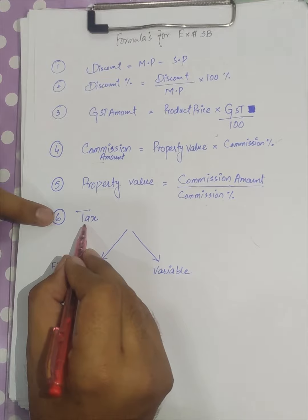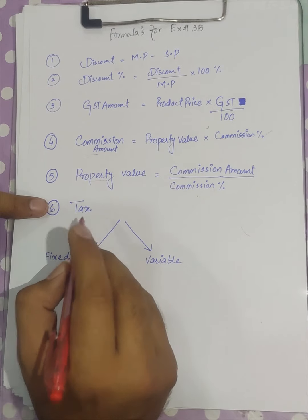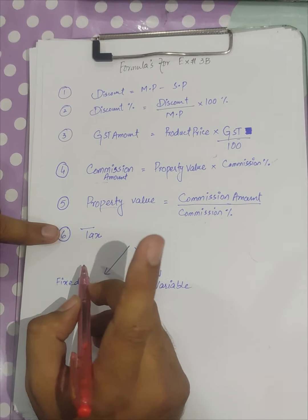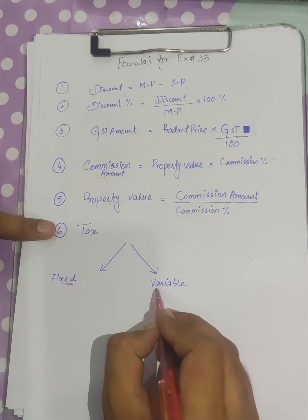And the sixth topic we have learned is tax. In order to calculate the tax, we have to first determine whether the amount is taxable or not. When it's taxable, there are two categories: one is a fixed tax that we can see in the table, and the other is the variable tax.